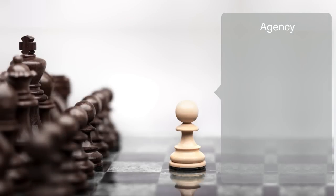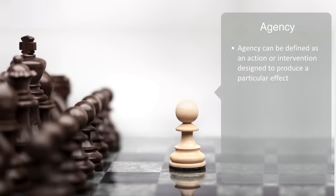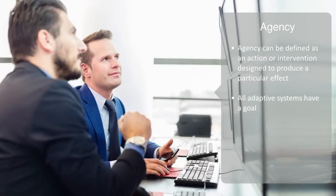Within complex adaptive systems theory, these adaptive systems are called agents, and they are so-called because they have agency. Agency can be defined as an action or intervention designed to produce a particular effect. An agent, then, is an entity that takes an active role to produce a specific outcome. Thus, agents do not act in a random fashion, but actions are performed in order to produce a particular effect. That is to say, all adaptive systems have a goal, whether we're talking about a plant that adapts its state by moving towards the direction of sunlight, or a trader who buys a particular security to diversify her portfolio.